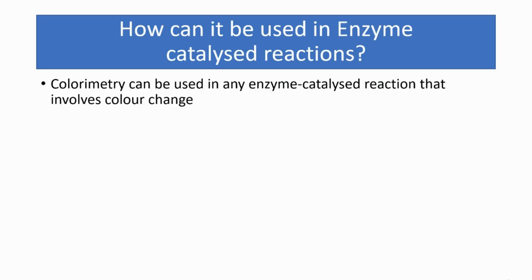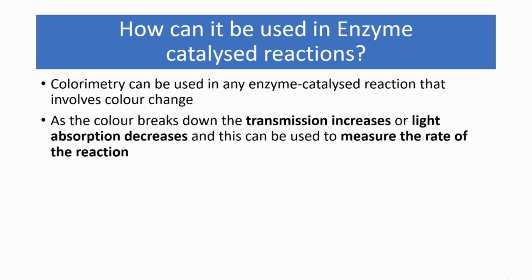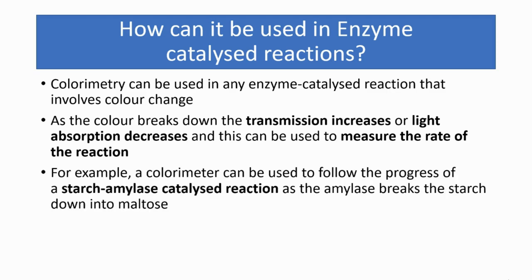How can it be used in enzyme catalyzed reactions? This involves color change. For example, iodine will change color. As the color breaks down, the transmission increases or light absorption decreases, and this can be used to measure the rate of reaction.